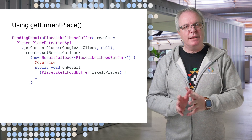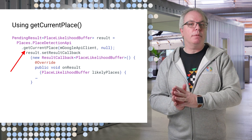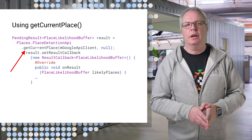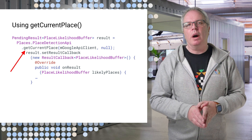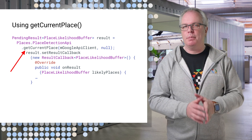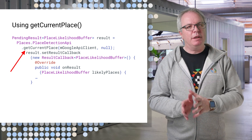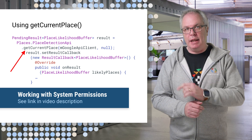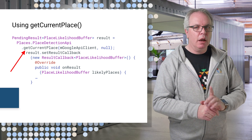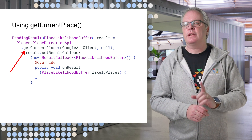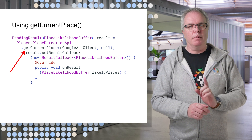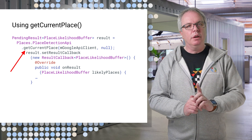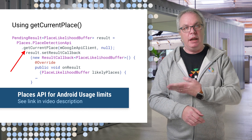It uses the Place Detection API's getCurrentPlace call to find the current location. This requires the accessFindLocation permission to be set in your app. You can learn all about permissions at the provided link. Do note that this is subject to limits, so make sure you don't call it too often. You can learn more about the usage limits here.